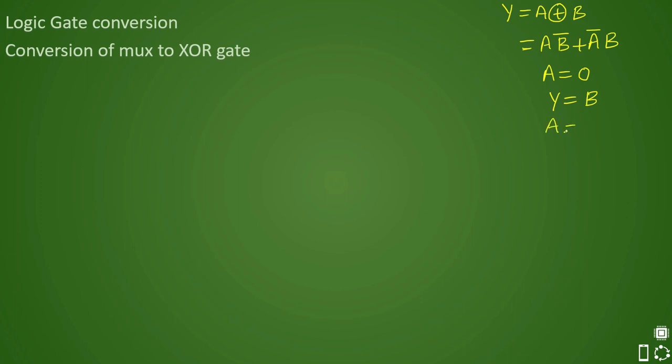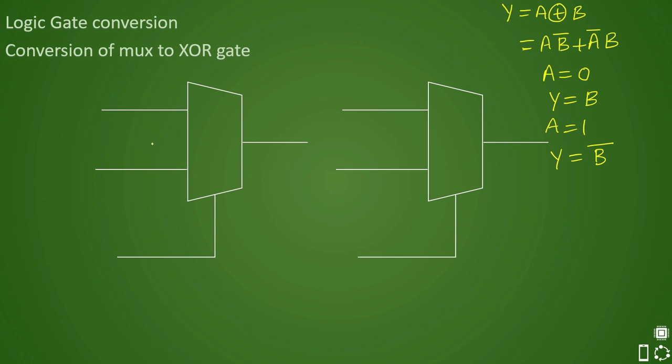Now let us assume if A is one, obviously your Y will be B bar. You can check that here. Y will be B bar. So based on this conditional analysis, we know that there is a NOT applied here. So that is why we need two input XOR, for a two input XOR gate, we need two MUXs back to back and we need a NOT gate construction.